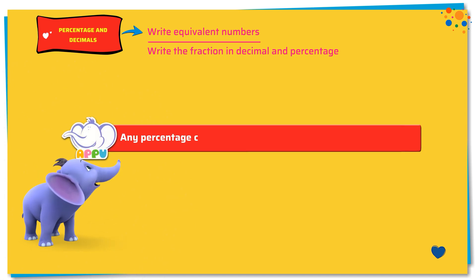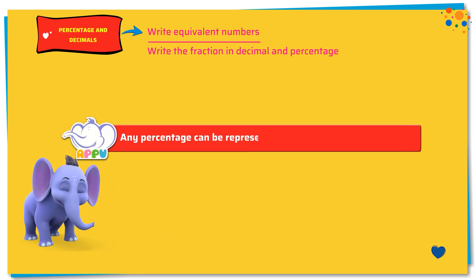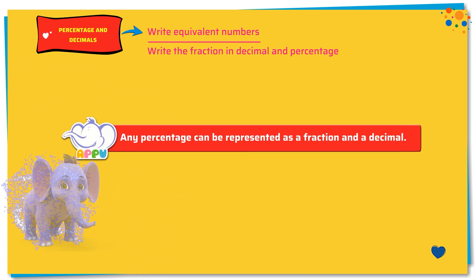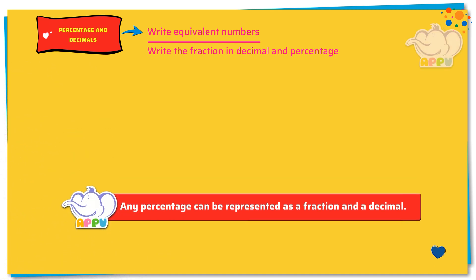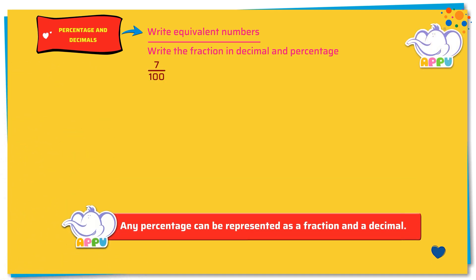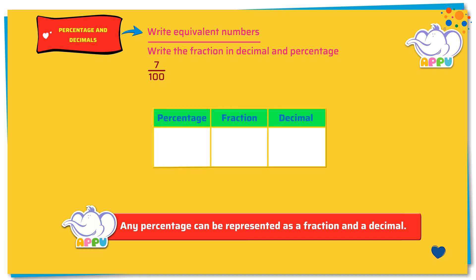Any percentage can be represented as a fraction and a decimal. 7 by 100. To convert a fraction to decimal, we divide the numbers. Here, 7 by 100 is 0.07.